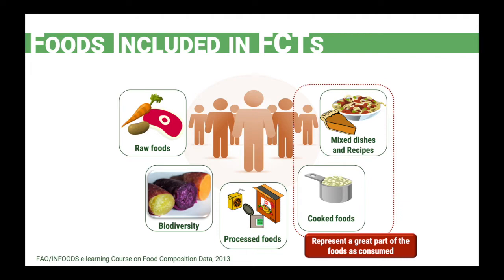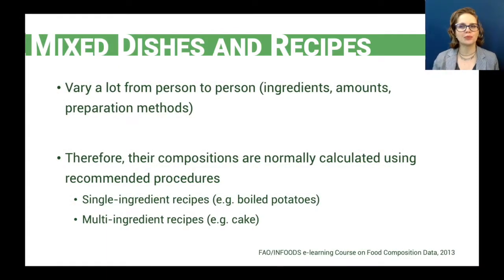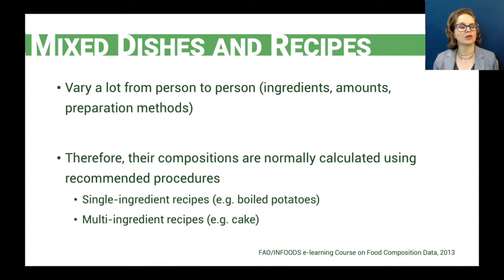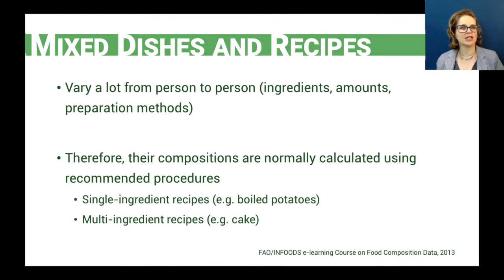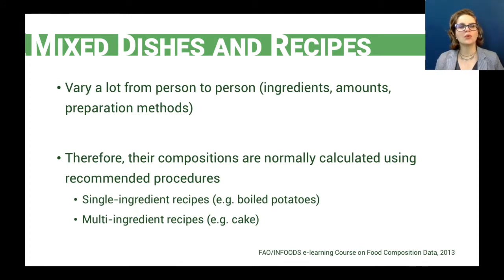Having mixed dishes in a food composition table may be very challenging, because they vary a lot from person to person. The ingredients, the amounts, and the preparation methods can change from one person to another. It's very common that we don't prepare the same recipe using exactly the same ingredients on different days. As a consequence of all these variations, we usually don't produce analytical values for recipes or mixed dishes. Instead, we calculate and estimate the nutrient content based on the composition of the ingredients.